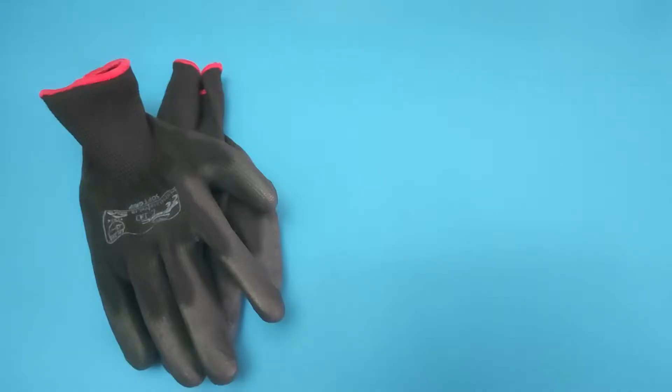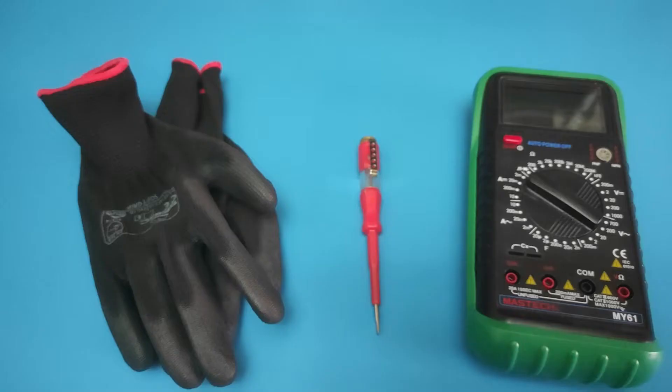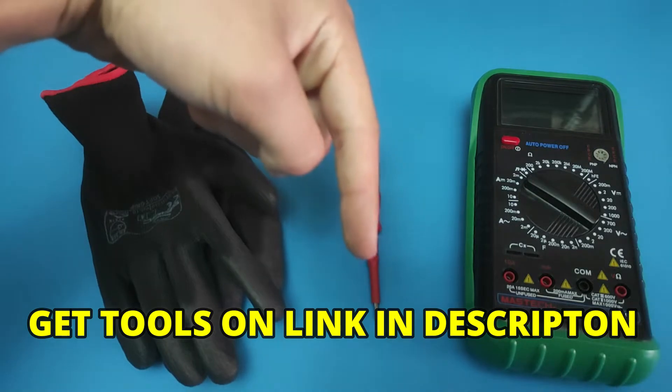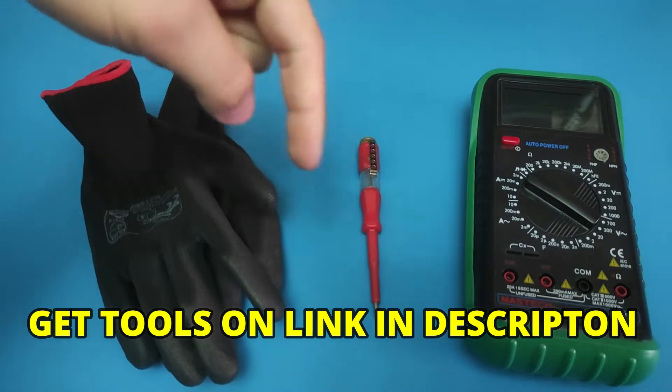To find hot wires we will need some tools: insulated gloves to avoid accidentally touching the live cable, voltage tester and multimeter. Without these essential instruments, you cannot be certain which wire is hot and which is neutral. You can get these tools on link in the description of the video.